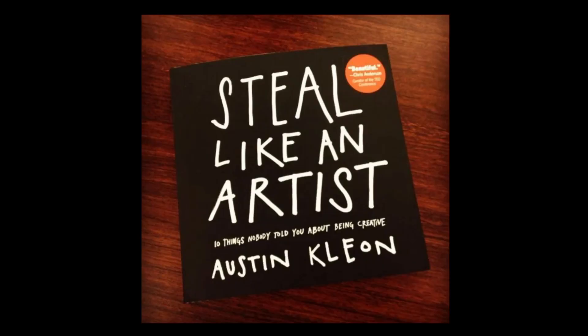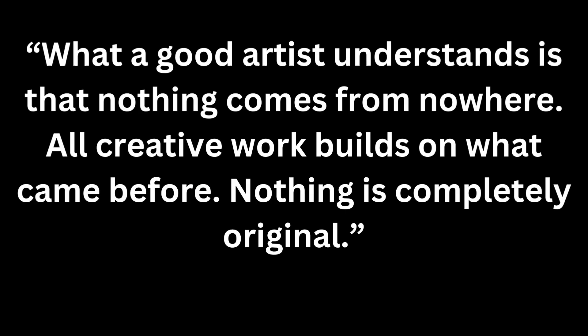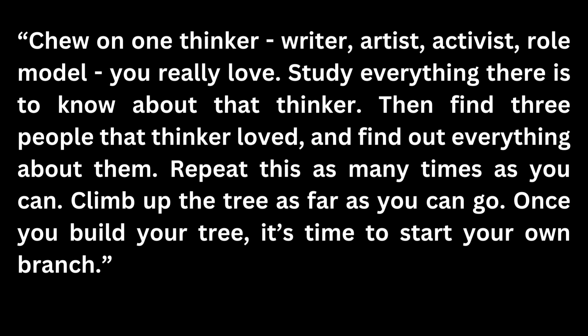Author Austin Kleon writes in his book Steal Like an Artist: 'What a good artist understands is that nothing comes from nowhere. All creative work builds on what came before. Nothing is completely original.' He writes further: 'Chew on one thinker, writer, artist, activist, role model — someone you really love. Study everything there is to know about that thinker. Then find three people that that thinker loved and find out everything about them. Repeat this as many times as you can. Climb up the tree as far as you can go. Once you build your tree, it's time to start your own branch.'